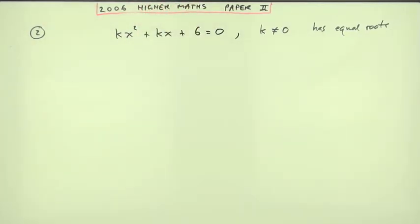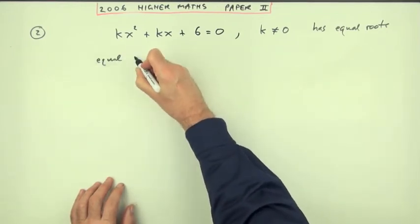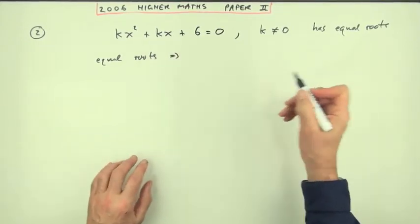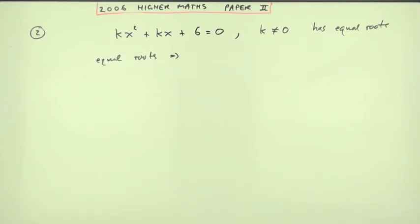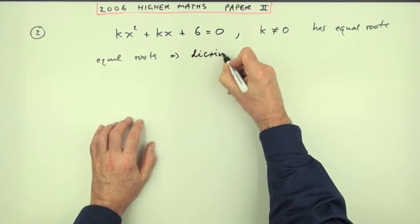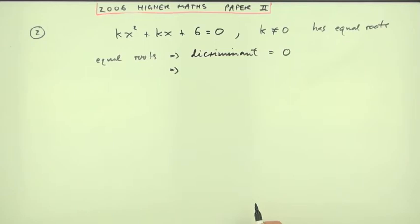Equal roots means the discriminant should be zero. You have to make a statement to that effect: equal roots means either write discriminant equals zero or b squared minus 4ac equals zero. If you write discriminant equals zero, I could go straight in with what's the discriminant.